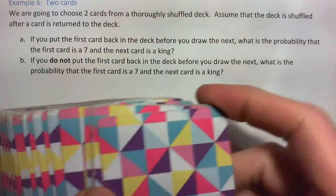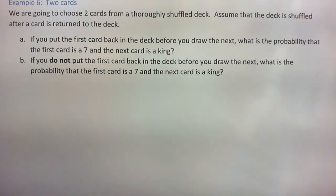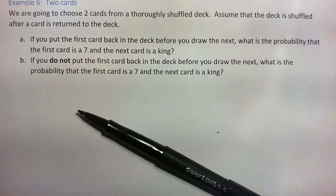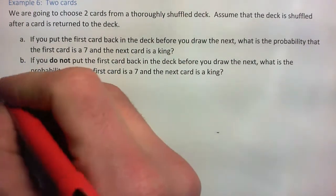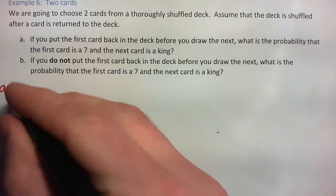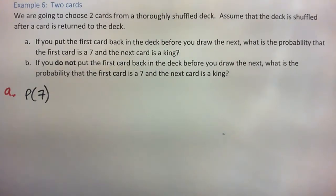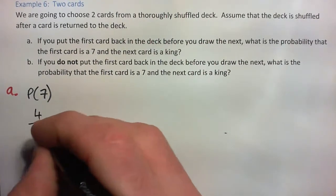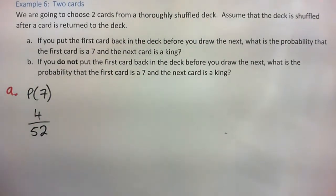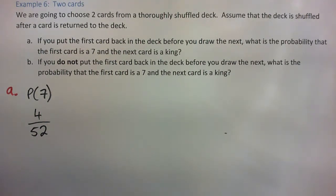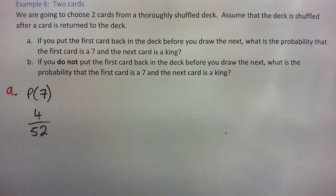So we are going to draw a card and the first card needs to be a 7. We want the probability of a 7 on the first card. There are four 7s in the deck and the deck is 52, no jokers. So 4 out of 52, which simplifies to 1 out of 13. Because there are four suits and 13 different cards of each suit.